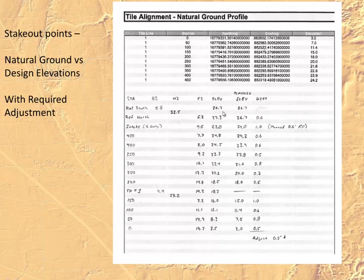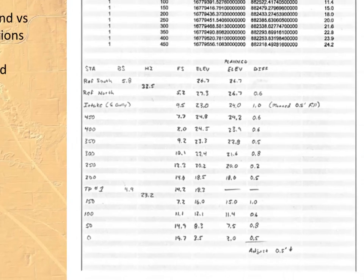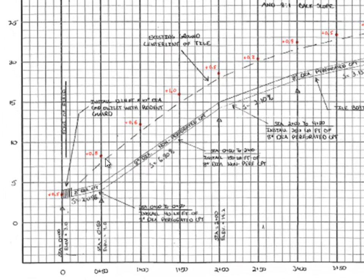Here's an example where there was a vertical shift. You can see the staked elevations alongside planned elevations and the difference. There's a 0.5-foot adjustment required to make elevations in the field match what was on the design sheets. The points in red are those staked in the field — each slightly above the design elevations, but relatively very accurate. Making that adjustment brings the elevation in the field in line with what was on the design sheet.